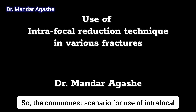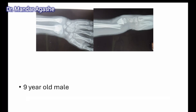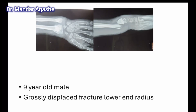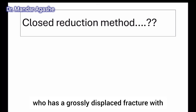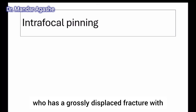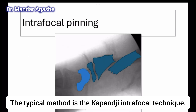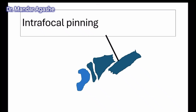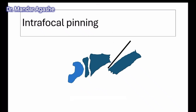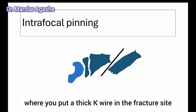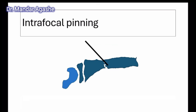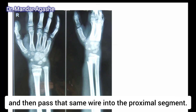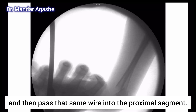The commonest scenario for use of the intrafocal technique is the displaced lower end radius fracture in a slightly older child who has a grossly displaced fracture with median nerve symptoms. The typical method is the Kapanji intrafocal technique, where you put a thick K-wire in the fracture site and lever it out.